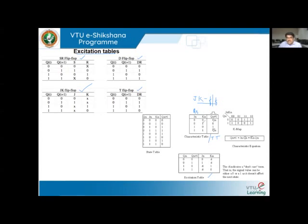The truth table of the JK flip-flop states: when the flip-flop is enabled by the clock, if J=0 and K=0, the next state equals the previous state. If J=0 and K=1, it resets. If J=1 and K=0, it sets. And if both J=1 and K=1, the output is the complement of the previous state.